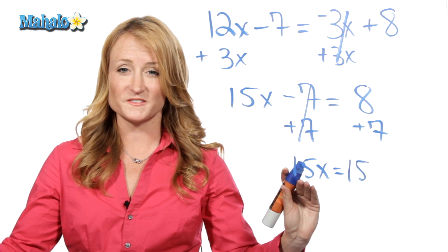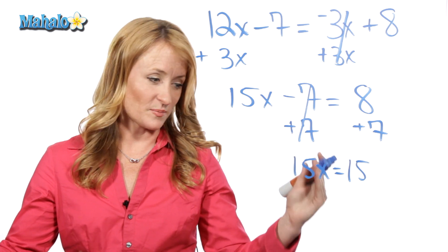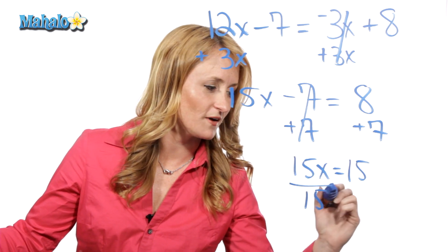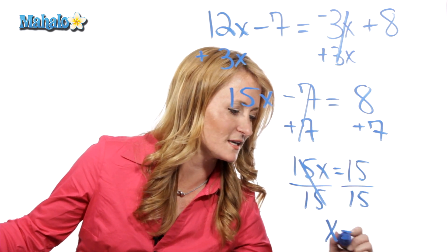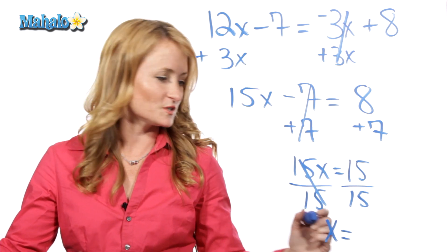And now this is 15 times x. So, the opposite of times is divide. So, we're going to divide both sides by 15, and you're left with x equals 15 over 15, which is 1.